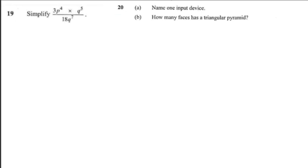Question 19 was as follows. Simplify 3p to the power of 4 multiplied by q to the power of 5 divided by 18q to the power of 7.